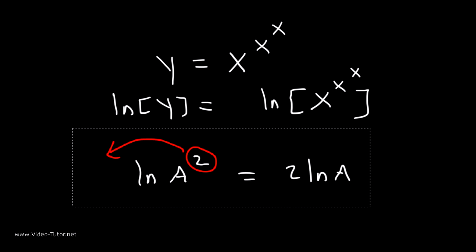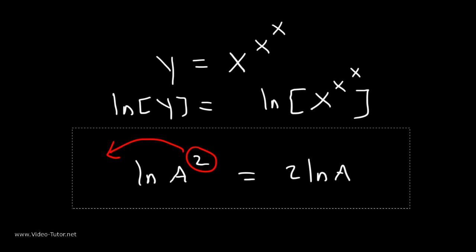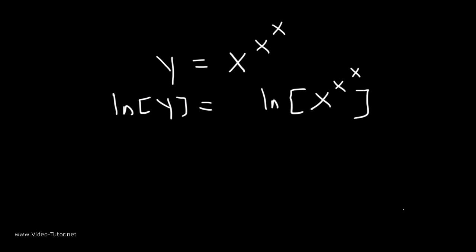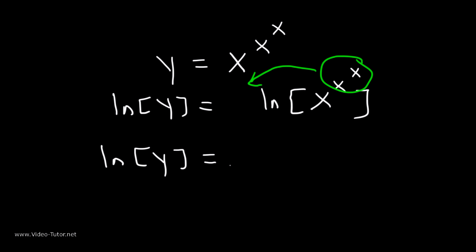So let's go ahead and apply that property. We need to take the entire exponent of x, that is x to the x, and move it to the front. So therefore, the natural log of y is equal to x raised to the x times ln(x).